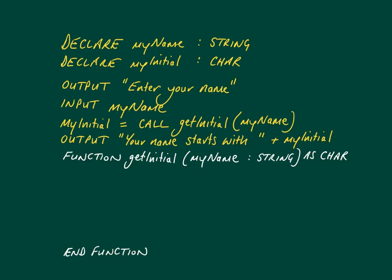This is what you should always see when you're defining a function to begin with. Functions return values and we're returning a character, so let's declare a local variable in here that can store a character. The last thing the function does before it ends is to return that character to the calling code. So we've declared a local variable called 'output' which is a character, and the very last thing the function does is return whatever is contained within that variable 'output' to the calling code. This is the calling code where 'my initial' is set to the result of 'get initial my name'. For example, if I entered my name as Ian, I'd expect the initial 'I' to be returned and stored inside 'my initial'.